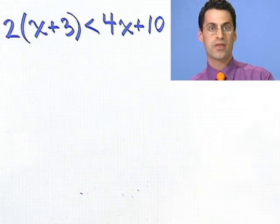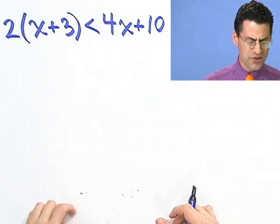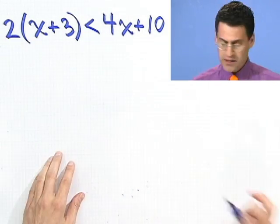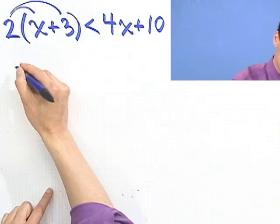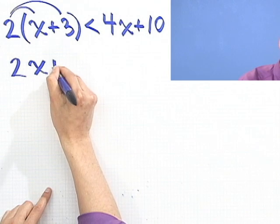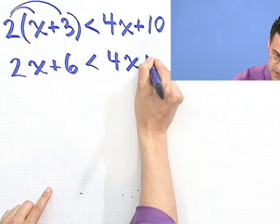So how to proceed? Well, the first thing I do is try to isolate all the x's. I'm going to distribute this 2 first in order to get rid of that parentheses. So that's no problem. 2x plus 6 less than 4x plus 10. And now I'm going to proceed just like I normally would.